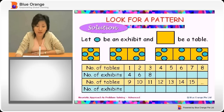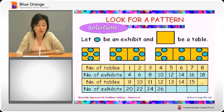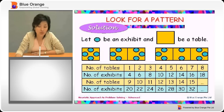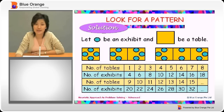So continuing the pattern: 4 tables give 10, then 12, 14, 16, 18, 20, 22, 24, 26, 28, 30, and 32. Therefore, we know that if there are 15 tables, there will be 32 exhibits.